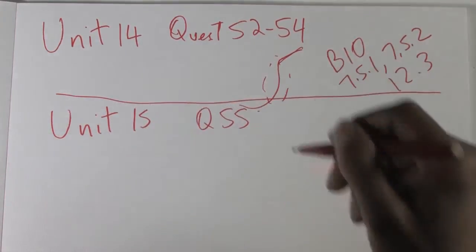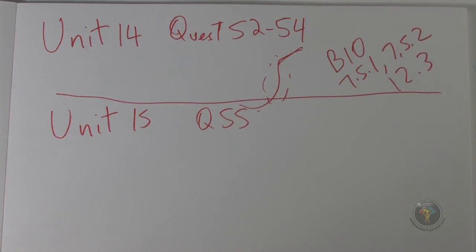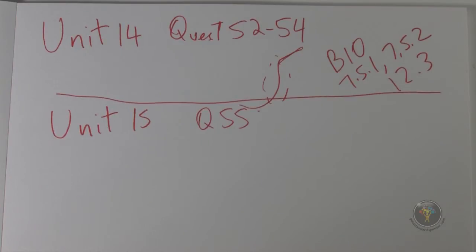Unit 15 only has one question — question 55 — and it considers the movement of some constituent animal cells when the cells are placed in pure water. So we're talking about cells in pure water. Which of the following is likely to move first and fastest across the cell membrane?